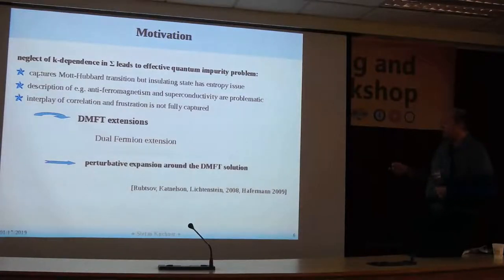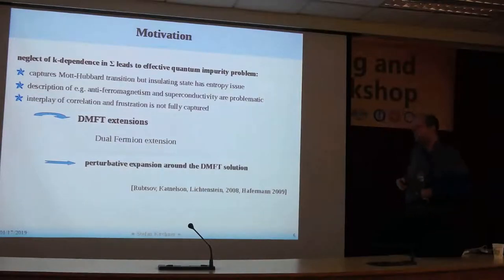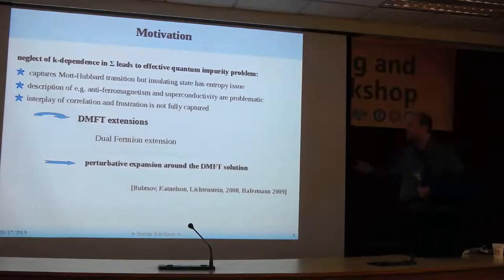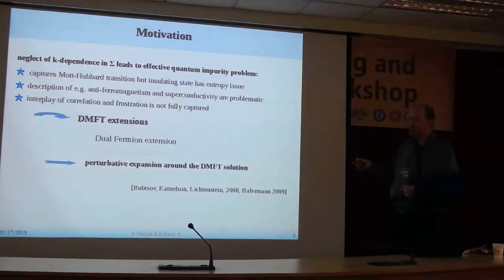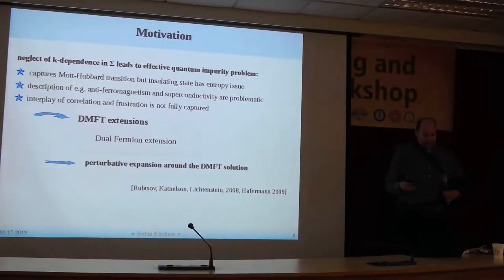It doesn't stop there. If you want to describe the interplay of antiferromagnetism with superconductivity, this is also problematic because you need finite momentum. Along the same line of argument, capturing the interplay between correlation and frustration is not fully captured in the DMFT. So people look for extensions of the DMFT, and there are many.